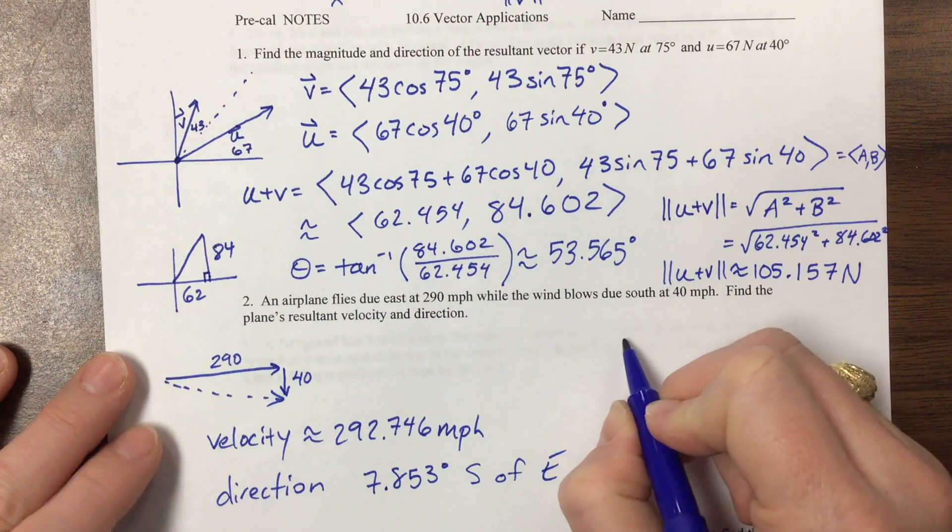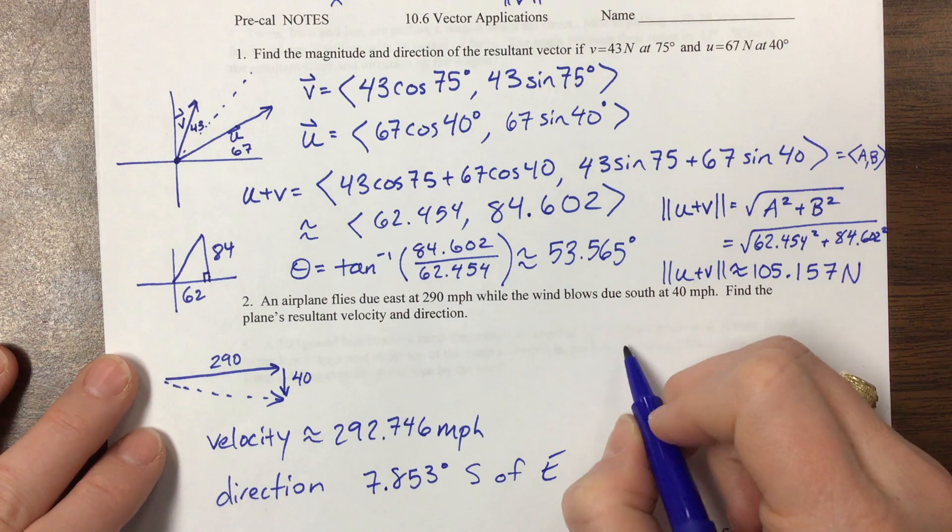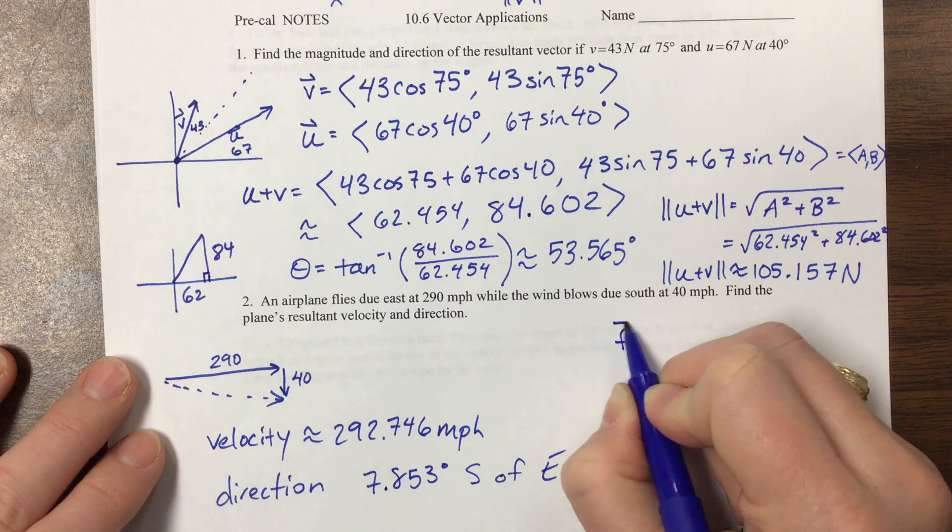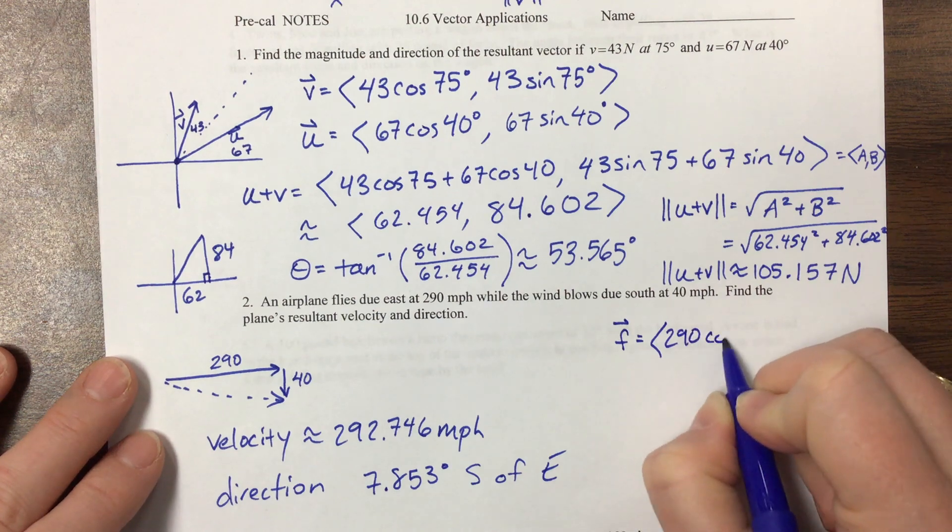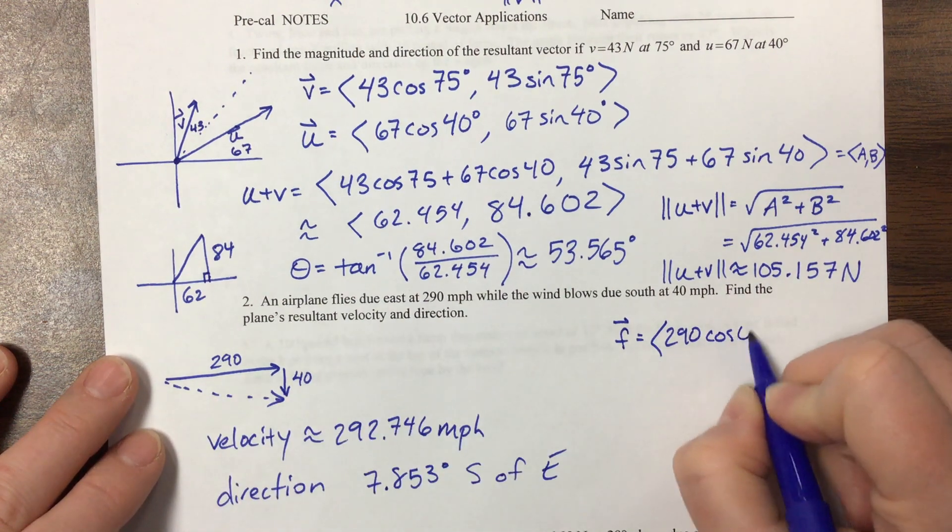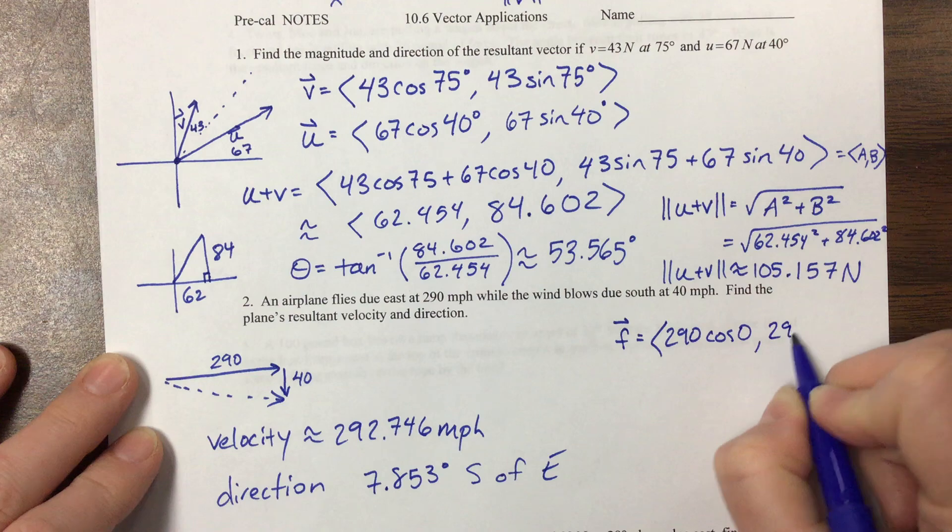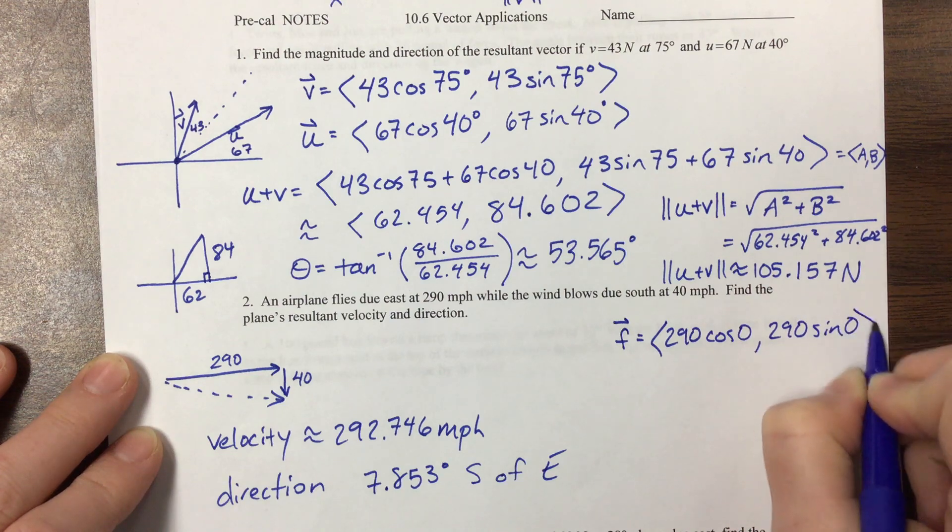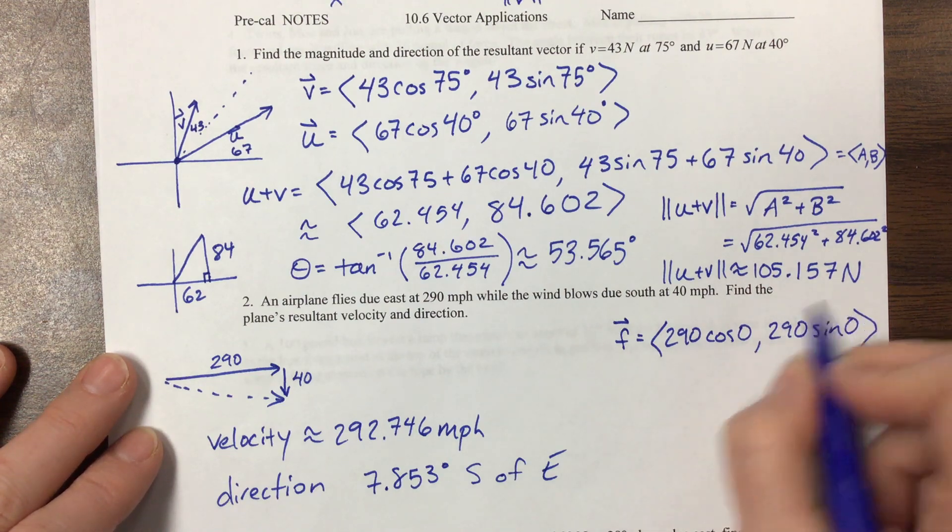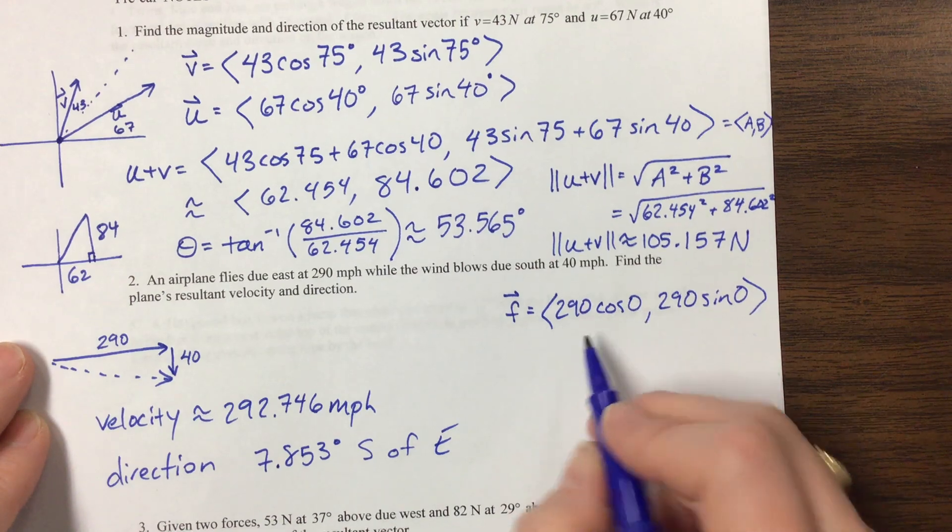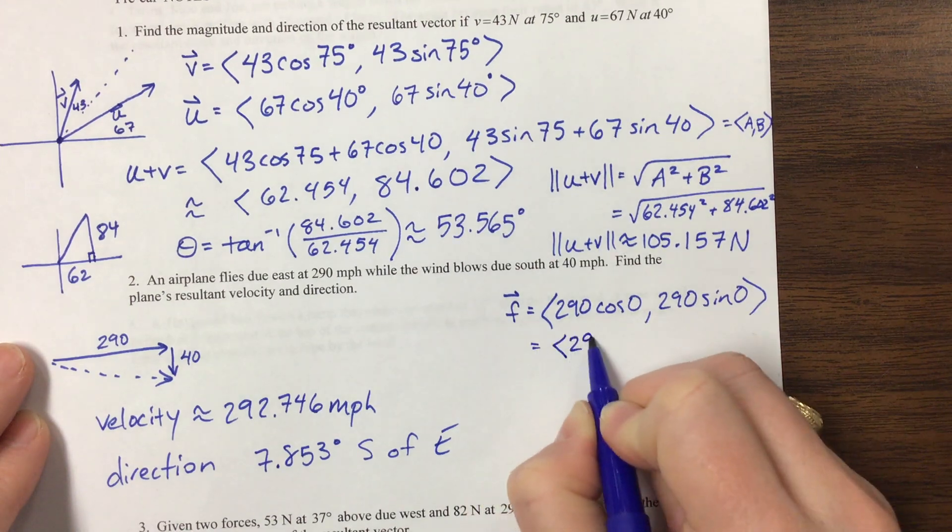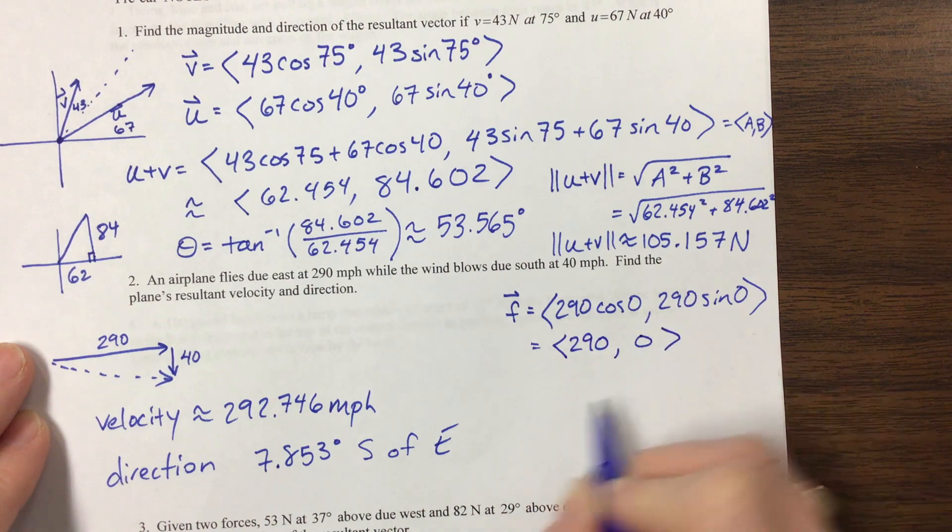Then what we can do is we can say that the flight of the airplane, so like vector f, is 290 cosine, and this on the unit circle is 0, and then 290 sine of 0. Well, you know sine of 0 is 0, so this whole thing goes to 0. Cosine of 0 is 1, so this vector here is 290 comma 0, and that's the flight.